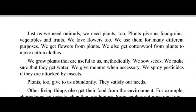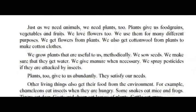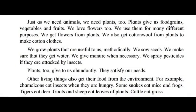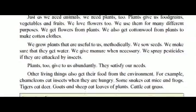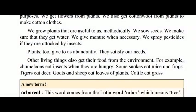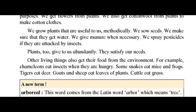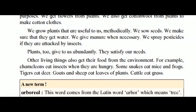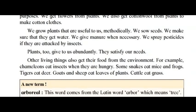Plants give us food grains, vegetables and fruits. We love flowers too and use them for many different purposes. We also get cotton wool from plants to make cotton clothes. We grow plants that are useful to us methodically — we sow seeds, make sure they get water, give manure when necessary, and spray pesticides if they are attacked by insects. Plants give to us abundantly and satisfy our needs.